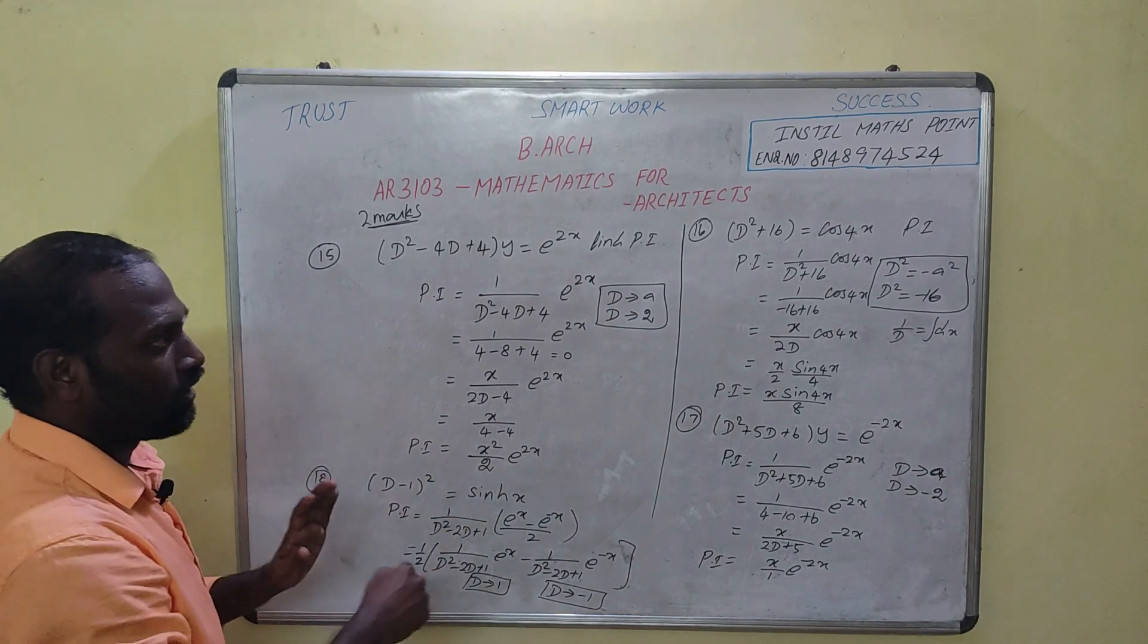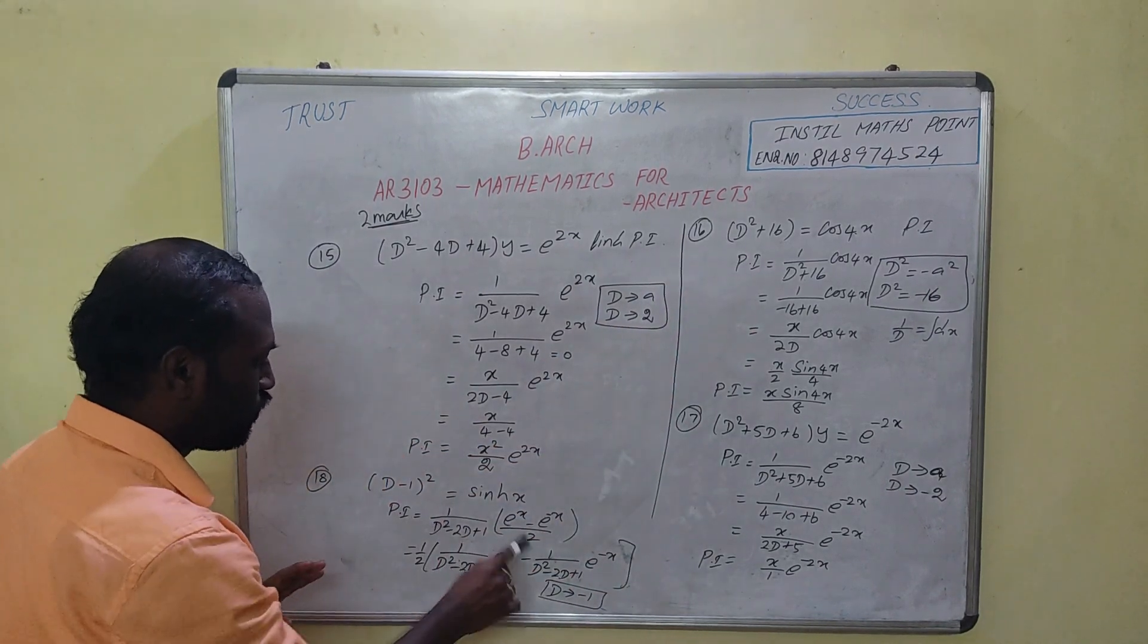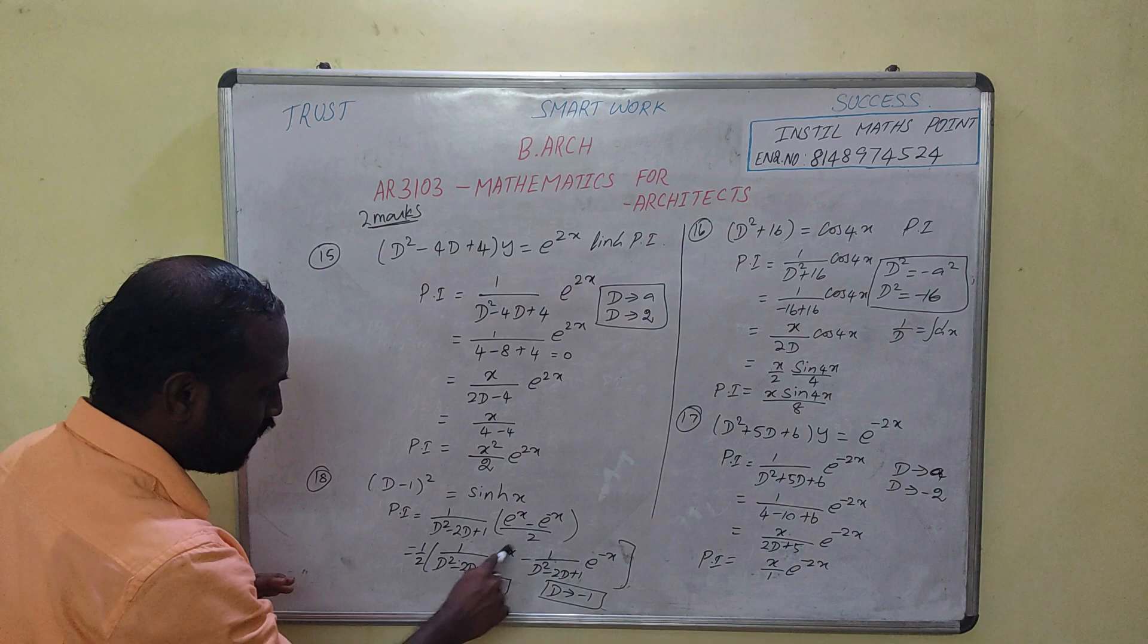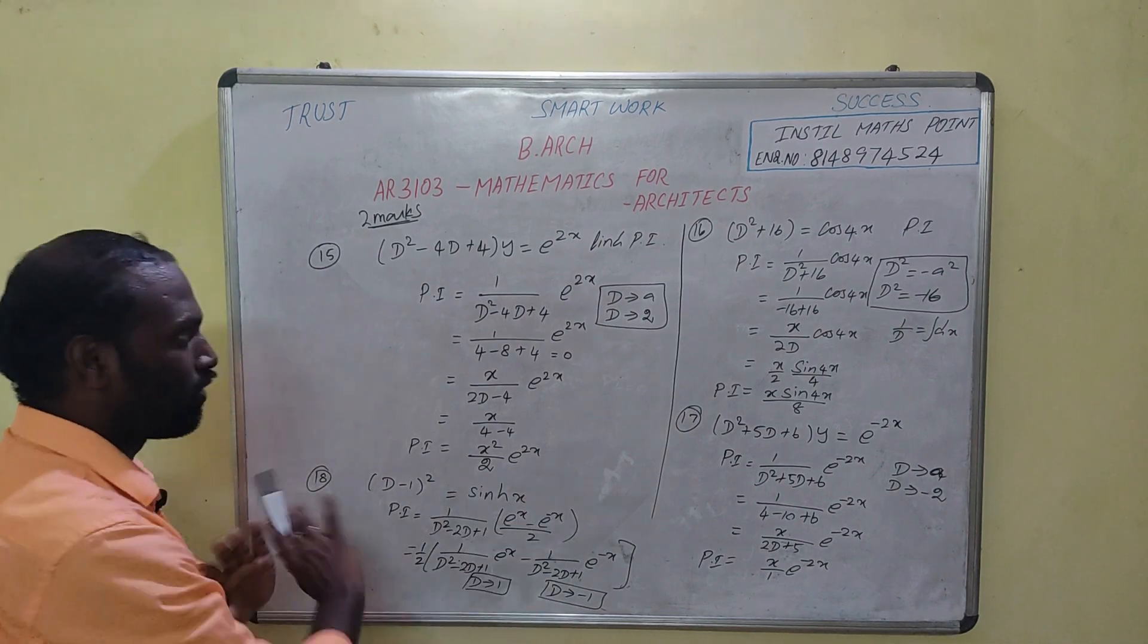Now you will change x. You will differentiate it. 2d, plus 5. If you apply it, you will get 0. You will change that. If you apply it, it is 0. The answer is P.